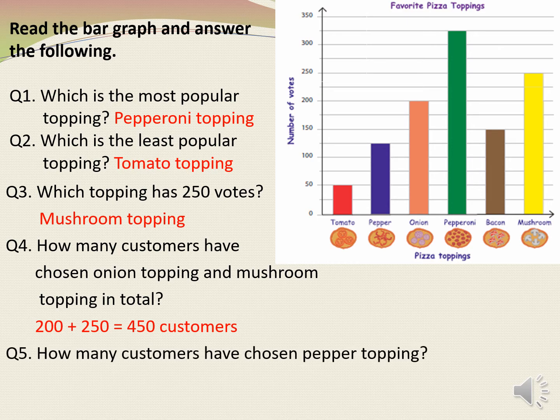Next: how many customers have chosen pepper topping? Let's see the bar which shows pepper topping — yes, the purple bar. Since the purple bar reaches between 100 and 150, therefore the answer will be 125 customers.